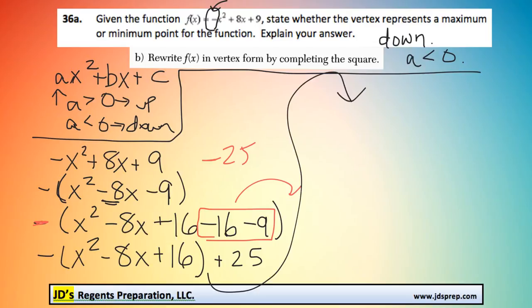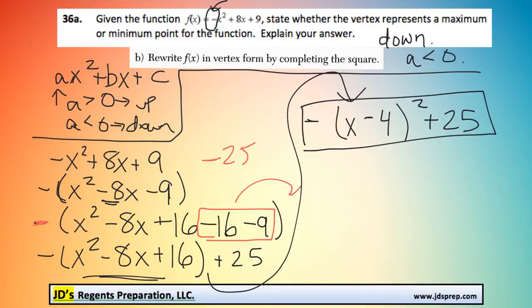Now that we have a perfect square trinomial, you can factor, and it'll become -(x - 4)² + 25. And so we're all done. This is the vertex form of f(x).